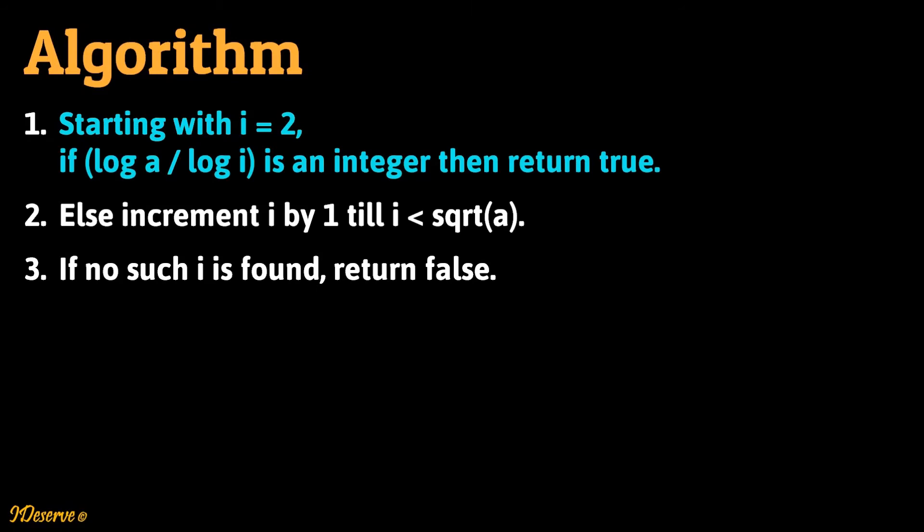So the algorithm is starting with i equal to 2 if log a by log i is an integer then return true. Else increment i by 1 till i is less than square root of a. If no such i is found return false.